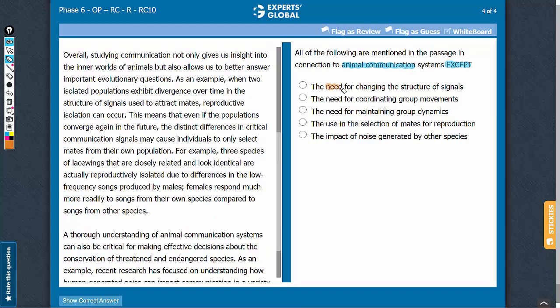Answer choice A: The need for changing the structure of signals. The second paragraph mentions that when two isolated populations diverge over time in the structure of signals, reproductive isolation occurs. So the change in the structure of signals results in reproductive isolation. However, the passage doesn't suggest anything about the need for the change in the structure, so this is a good answer choice. Let's keep it on hold.